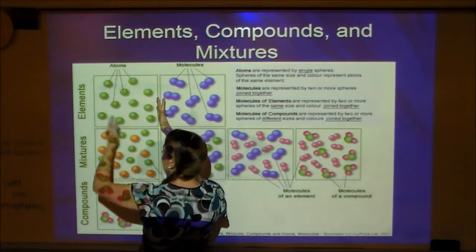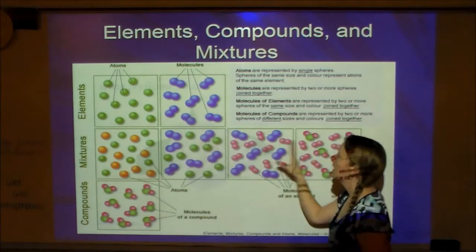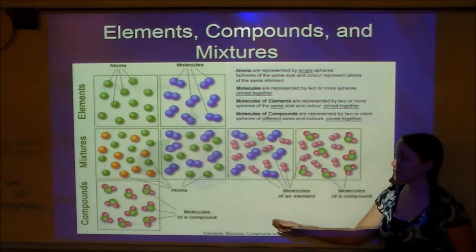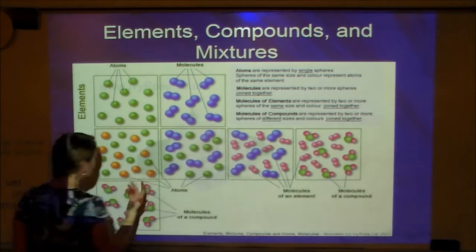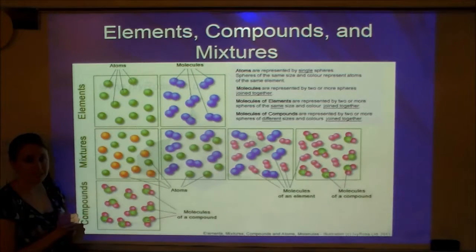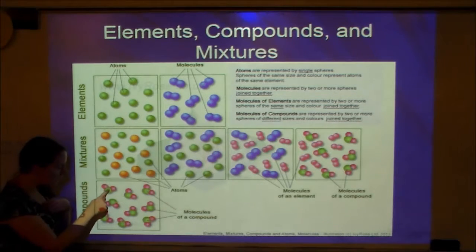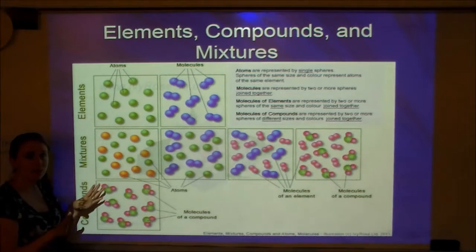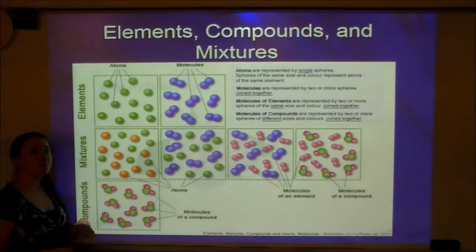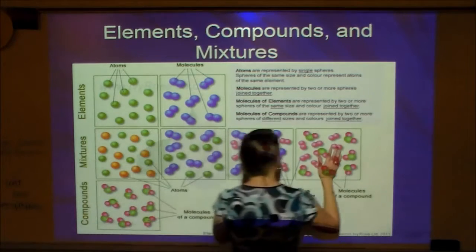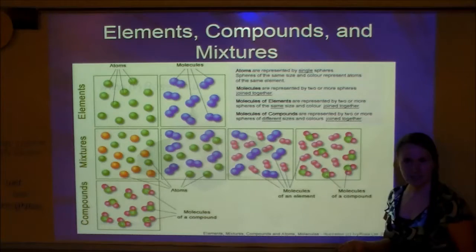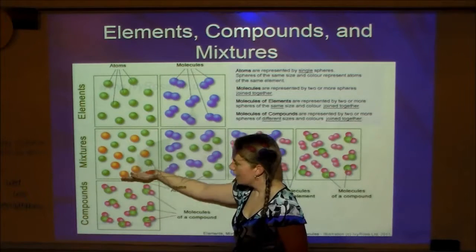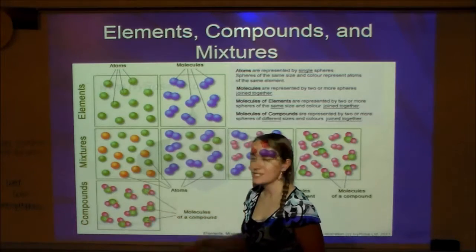A pure substance has particles that all look exactly the same — that's an element. A compound is the one people often confuse with a mixture. In a compound, you'll see different colors because it's more than one element bonded together, but every single particle is still the same arrangement — for example, every particle is one green and two pinks. In a mixture, you'd see some particles that are green with two pinks and some that are just two pinks. So: elements are all the same color; mixtures have different types of particles; compounds have different colors but every particle is the same setup.